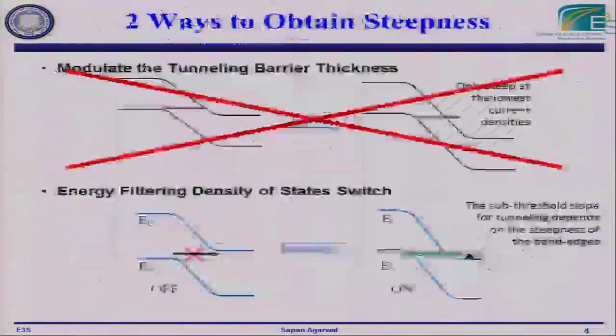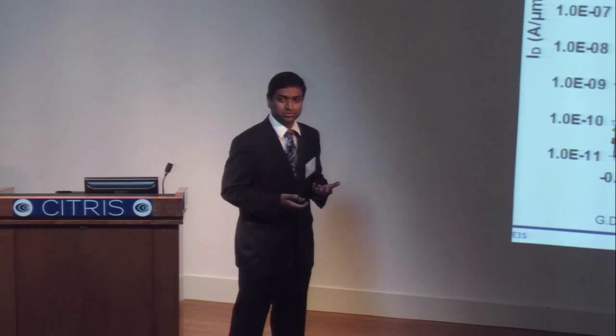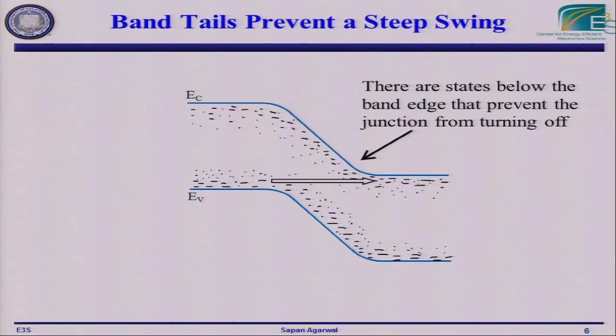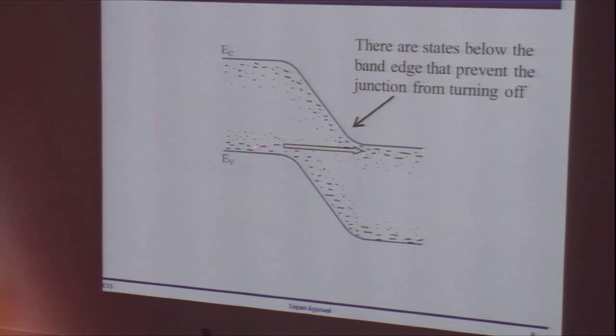That means we can't use tunneling barrier thickness modulation, so let's try energy filtering or density-of-states switching. The problem is that nominally the device should be off, but there are a lot of states below the band edge, so you actually have current flowing. We need to understand the actual distribution of these states.